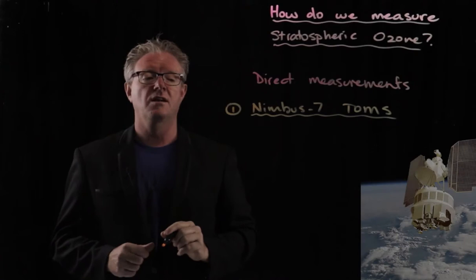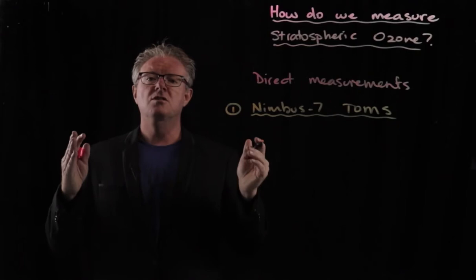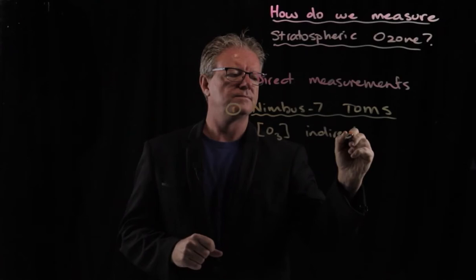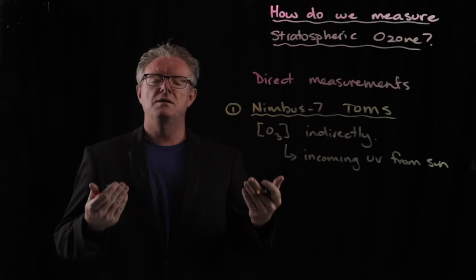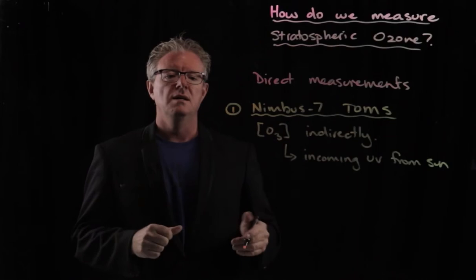What it actually does is measure the concentration of ozone indirectly. It measures the incoming UV radiation from the sun, and then it measures the amount of UV reflectance or albedo from the atmosphere. So the difference between those two values gives you the total amount of ozone.